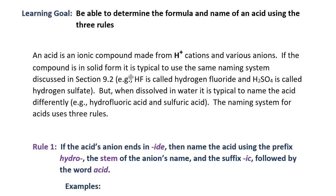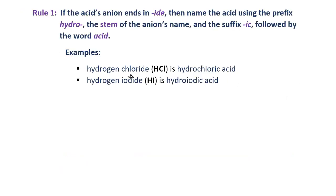This naming system for acids uses three rules. Rule number one: if the acid's anion ends in "-ide", then name the acid using the prefix hydro, the stem of the anion's name, and the suffix "-ic", followed by the word acid.